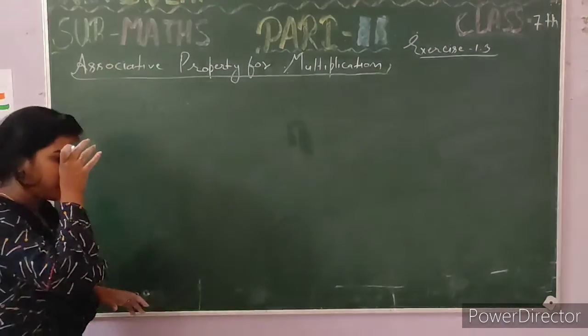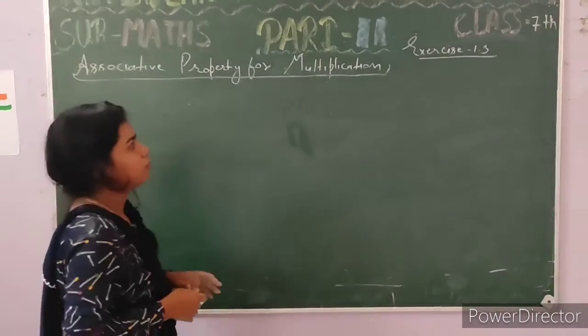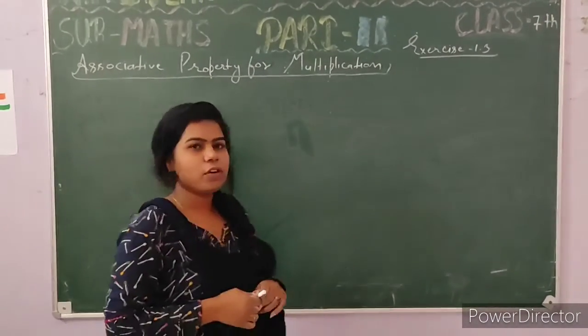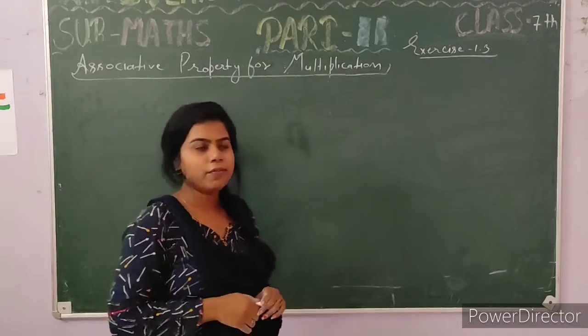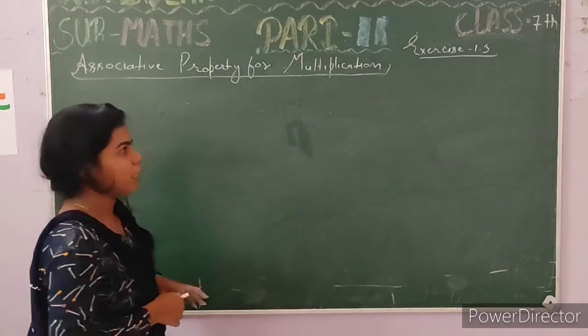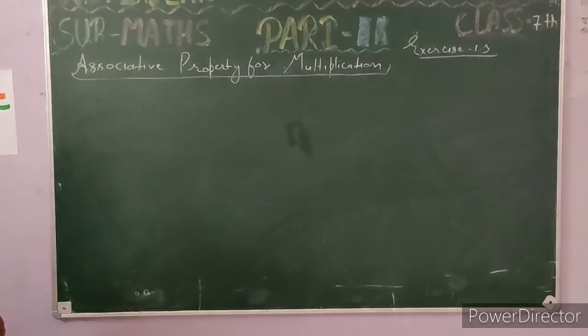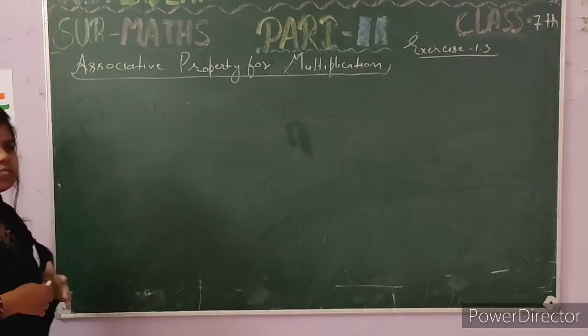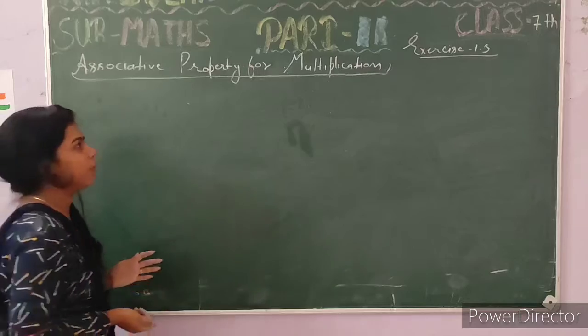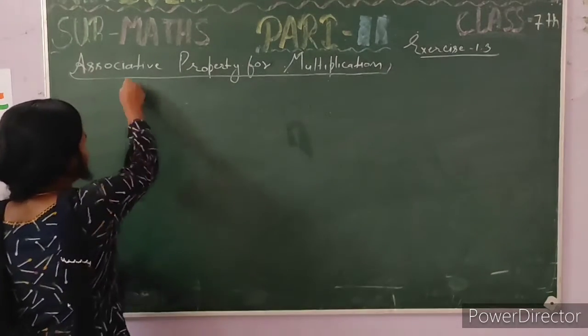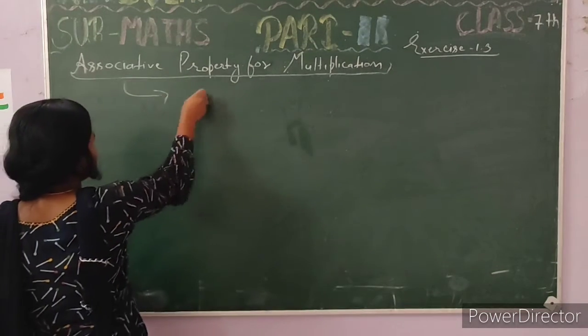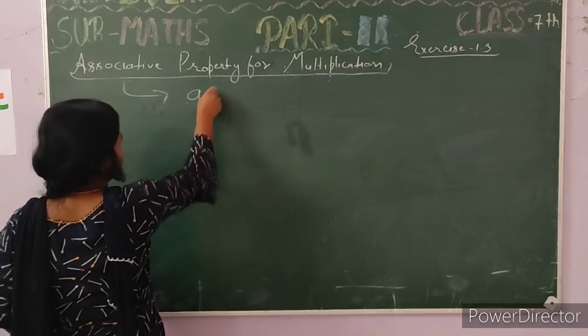What is the meaning of associative property for multiplication of integers? Our chapter is on integers, so we use integer digits — plus and minus — here.